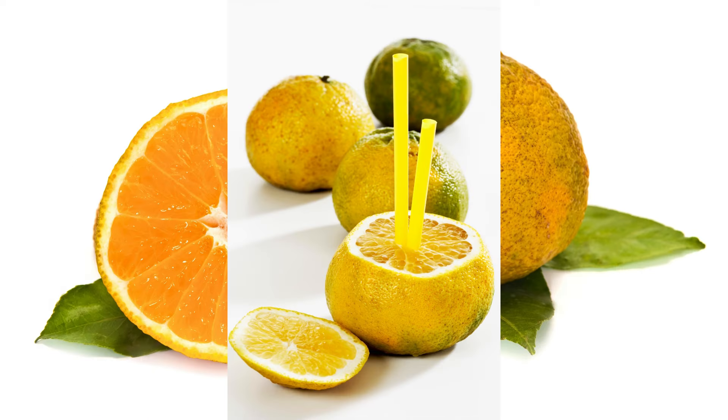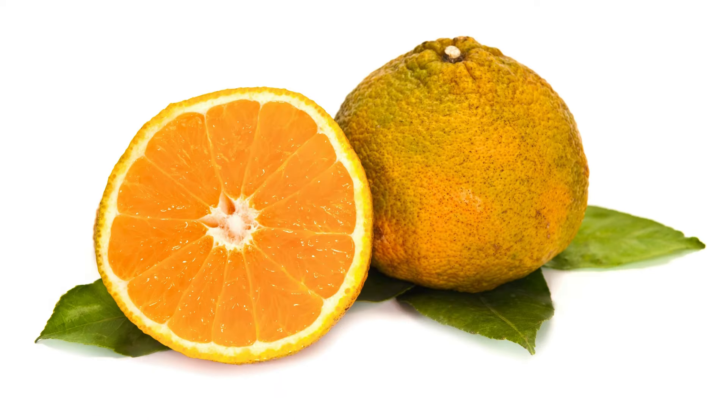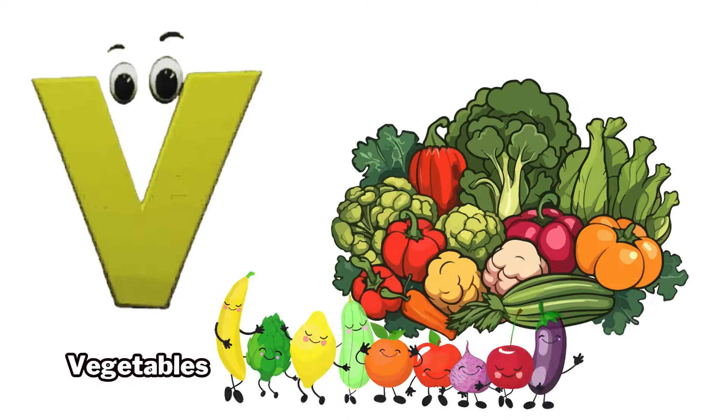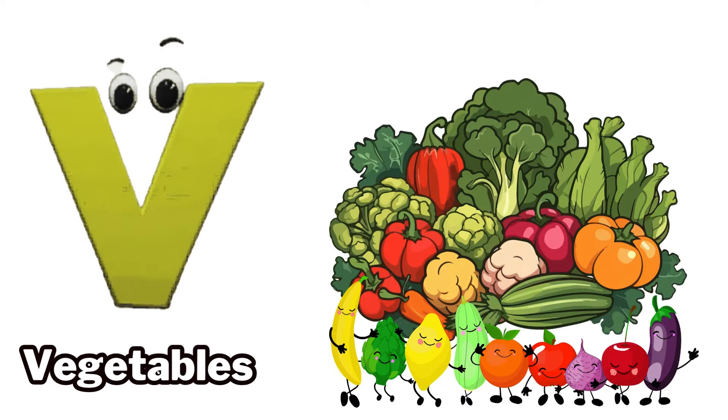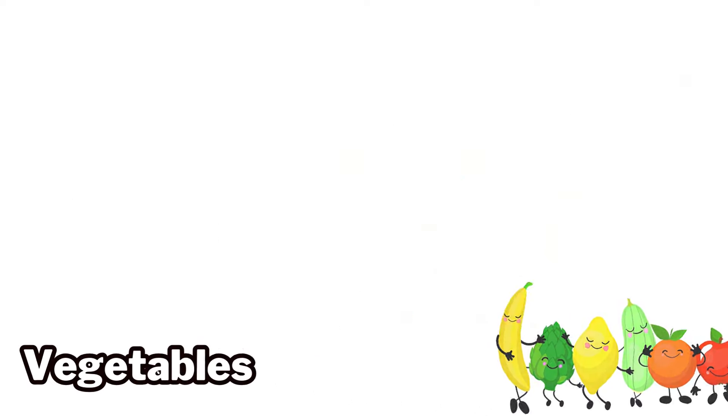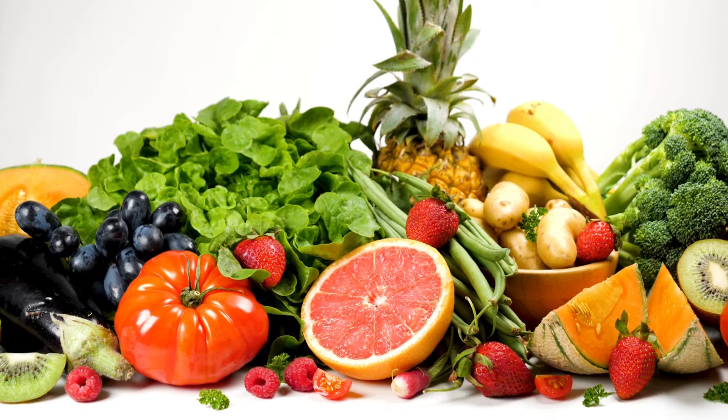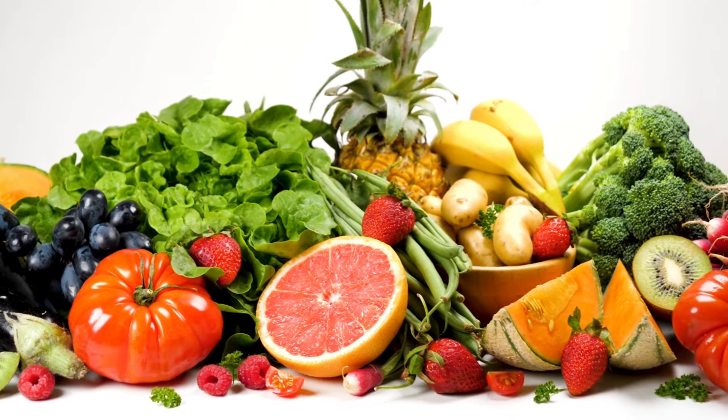U is for ugly fruit. U. Ugly fruit. V is for vegetables. V. Vegetables.